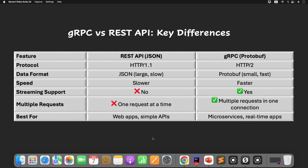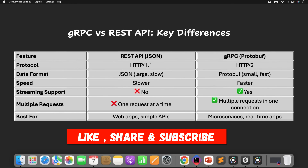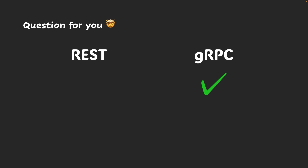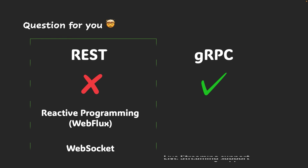Since this is just an introduction lecture, I hope you now have a clear understanding of what, why, and how gRPC works. Before we sign off, here is a question: we know gRPC supports live streaming, but REST doesn't natively support it. However, with reactive programming and WebSocket, we can achieve live streaming in REST as well. So why should we still choose gRPC over REST? Think about it and share your answer in the comments — the answer is hidden right there in this video. In the next video, we'll benchmark REST vs. gRPC to prove that gRPC is faster with real performance comparisons. Today was all about theory, but next time we'll back it up with real numbers. Stay tuned and I'll see you in the next video.